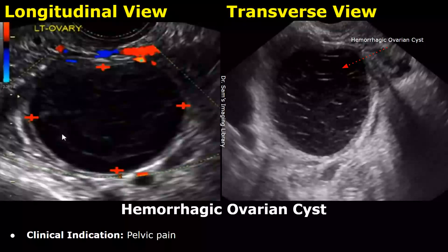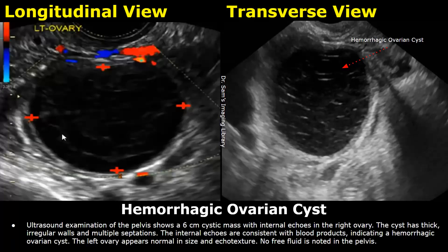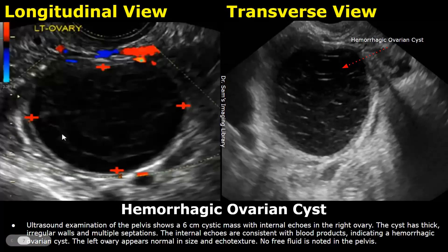Now we will look at hemorrhagic ovarian cyst. The clinical indication in this case was pelvic pain. In the findings, you can write the size of the cyst and then mention internal echoes. In the right or left ovary, the cyst has thick irregular walls and multiple septations. The internal echoes are consistent with blood products, indicating a hemorrhagic ovarian cyst. Then you can write about the appearance of the other ovary.